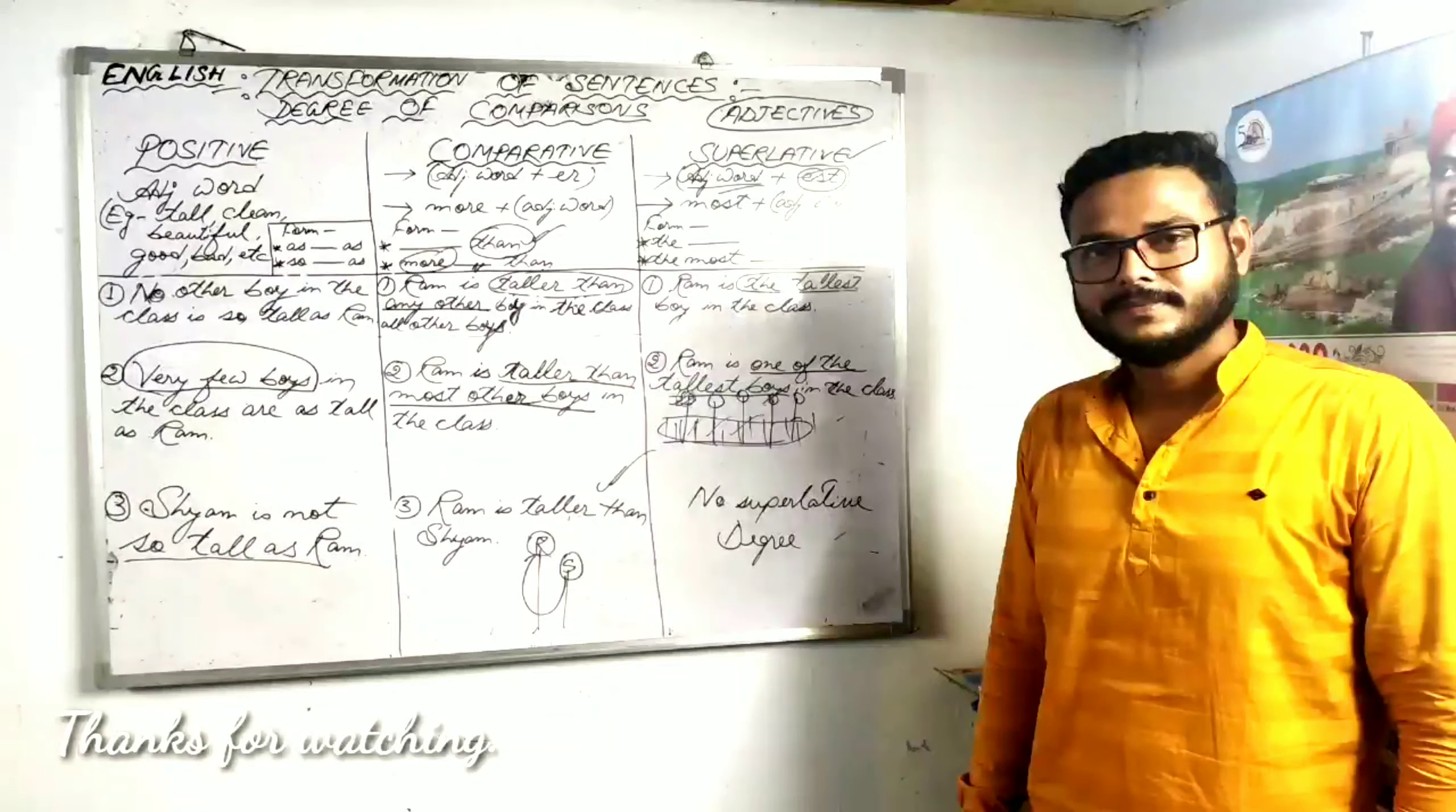And when you change this particular sentence into positive, you say in the other way. You say Sham is not so tall as Ram. This is the third type of degree of comparisons.